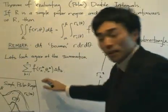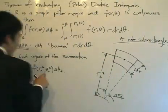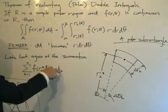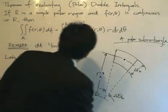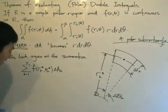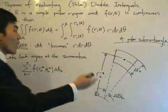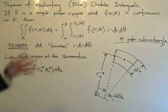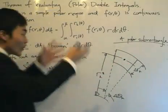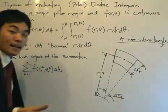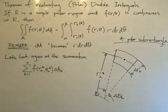The answer lies in the summation. Using the limiting process, we take the sum of the function applied to rₖ and θₖ multiplied by ΔAₖ. What we want to do is find an expression for ΔAₖ. ΔAₖ is one of the polar sub-rectangles formed by subdividing the region R using circular arcs and rays, and this is one of those sub-rectangles. Let's find an expression for the area of this sub-rectangle.